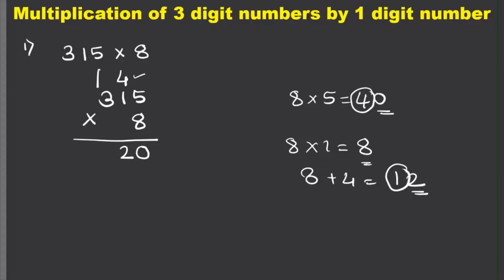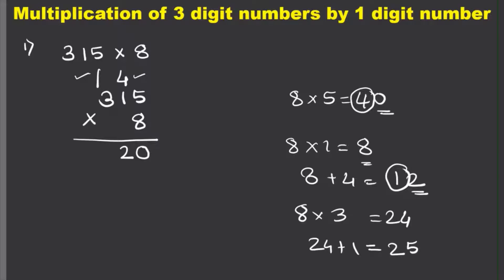Now 8 times 3 is 24, but we have to add the carried 1, so 24 plus 1 equals 25. I write 5 here, and since there are no more digits to carry over to, we drop the 2 here. We get 2520 as the answer when we multiply 315 by 8.